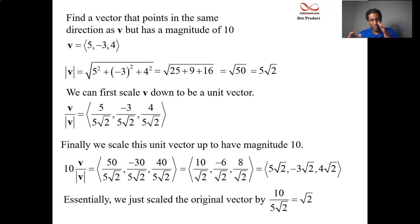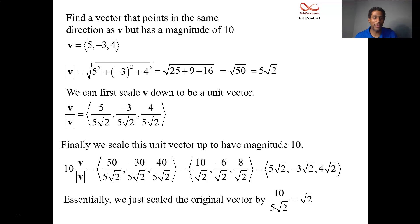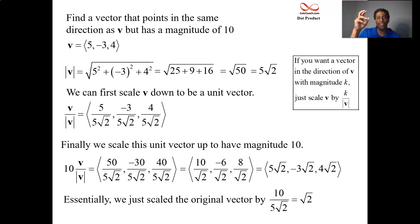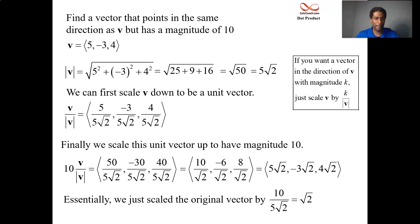So if you want a vector in the direction of a given vector and you have a prescribed magnitude K — like 10 for us — then all you need to do is scale that vector by K over |V|. That's one scalar. You don't have to scale it down and then scale it up.